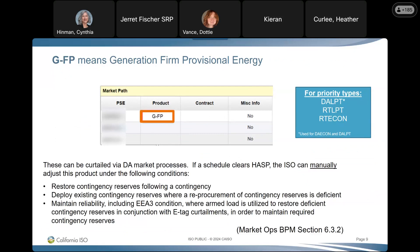GFP is generation firm provisional, meaning that it's not firm energy, and it's sold with agreed-upon terms with regard to curtailment. The WECC glossary definition states: this product may be interrupted only if the interruption is within the recall time for conditions allowed by applicable provisions governing interruption of service as mutually agreed upon by the parties. A GFP product cannot be interrupted for economic reasons.